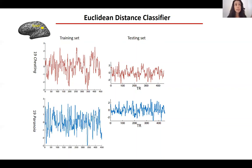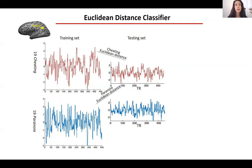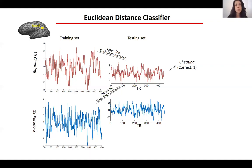We calculated the mean response of the paranoia context in each specific voxel or ROI. Then we calculated the Euclidean distance between the testing set vector and the cheating mean response — this is the cheating Euclidean distance — and also the distance between the cheating testing set and the paranoia mean response — the paranoia Euclidean distance. If the cheating Euclidean distance was smaller than the paranoia Euclidean distance, the algorithm classified that subject as belonging to the cheating group, and vice versa. We did the exact same thing for the paranoia testing set.